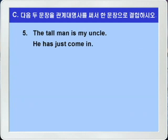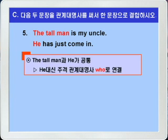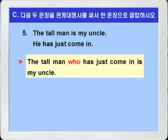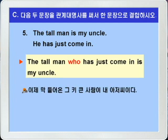5번입니다. The tall man is my uncle. He has just come in. 그 키 큰 남자는 내 삼촌이다. 그는 막 들어왔다. 두 문장에서 공통되는 것은 The tall man과 he가 서로 공통이죠. 따라서 선행사가 The tall man이 되는데 man이 사람이니까 he를 주격 관계대명사 who로 바꿔서 연결시키면 됩니다. The tall man who has just come in is my uncle. 이제 막 들어온 그 키 큰 사람은 내 삼촌이다.